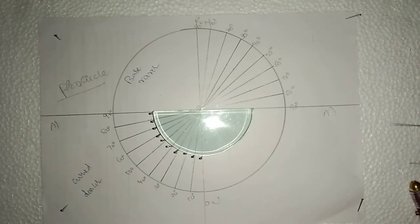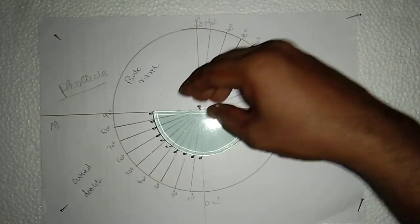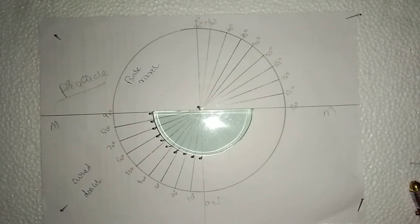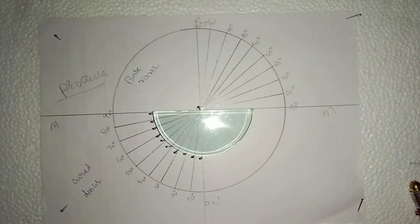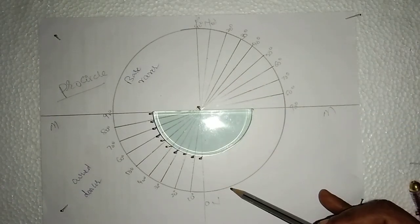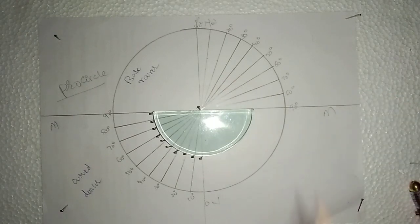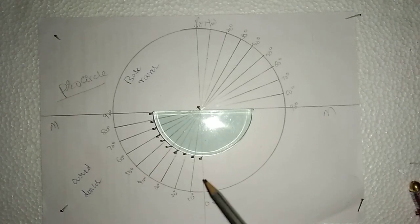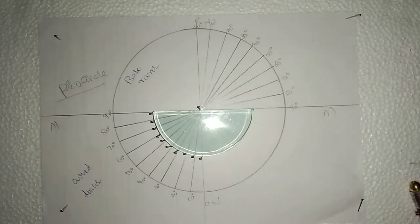I am going to insert a pin at point O. Till now, this is the same as what we did in the case of Snell's law. The difference between Snell's law and this activity is that in Snell's law we passed the laser light from base to curve, that is from rarer to denser. But in this activity, we are going to pass the laser light from curve to base, that is from denser to rarer. That is the main difference.